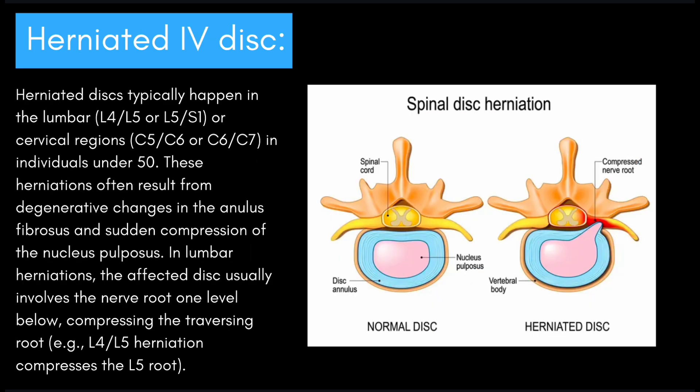Next, let's talk about herniated discs. Herniated discs typically happen in the lumbar L4-L5 or L5-S1, or the cervical region C5-C6 or C6-C7, in individuals under 50. These herniations often result from degenerative changes in the annulus fibrosis and sudden compression of the nucleus pulposus. In lumbar herniations, the affected disc usually involves the nerve root one level below, compressing the traversing root — for example, L4-L5 herniation compresses the L5 root.